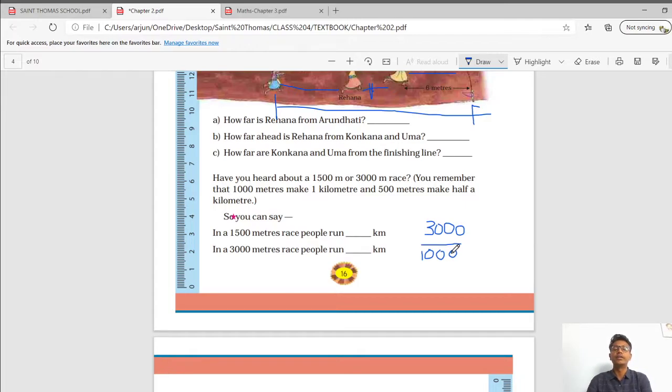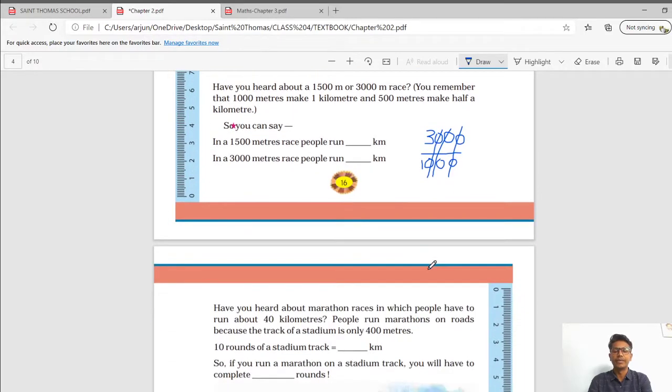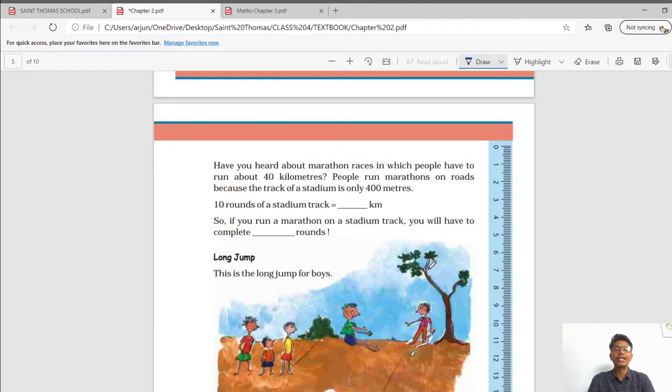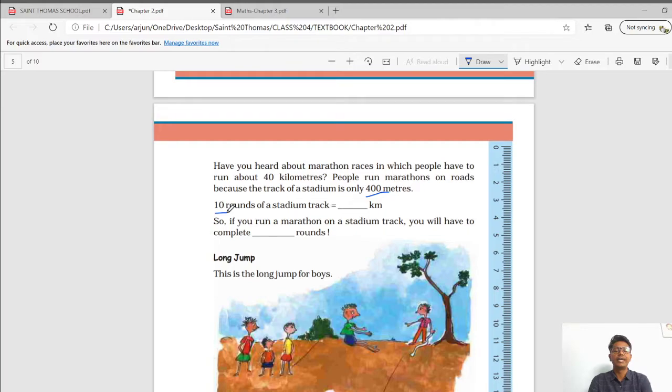We have given a shortcut method of dividing the 1000 number by this type of scenario. Cutting the zeros. And you will get the answer 3. Have you heard about a marathon race in which people have run about 40 kilometers? People run marathon on road because the track of stadium is only 400 meters.